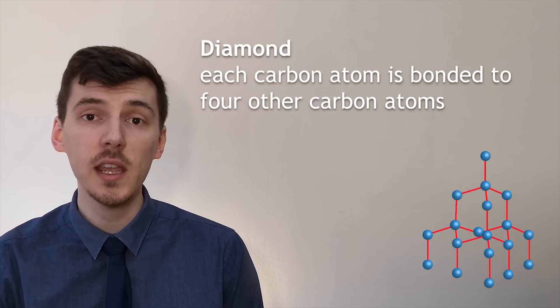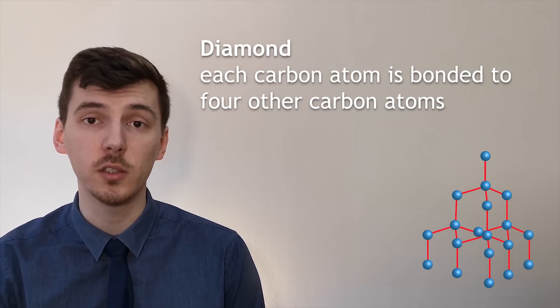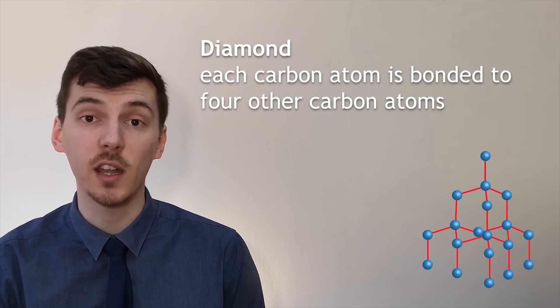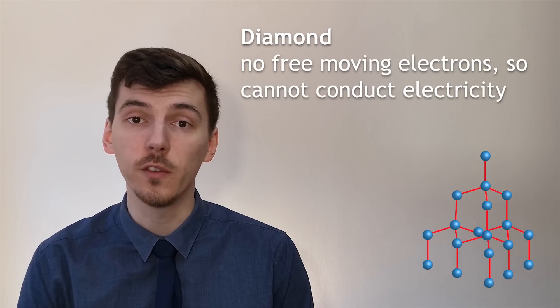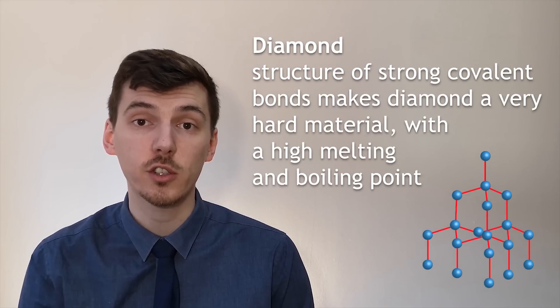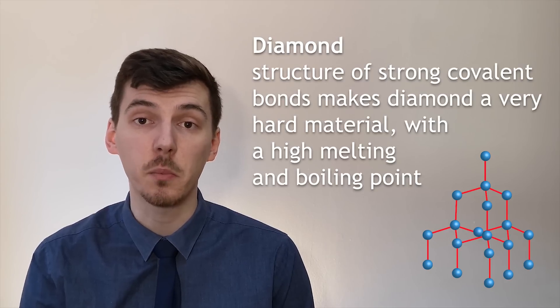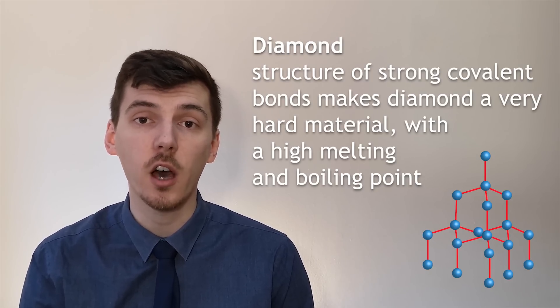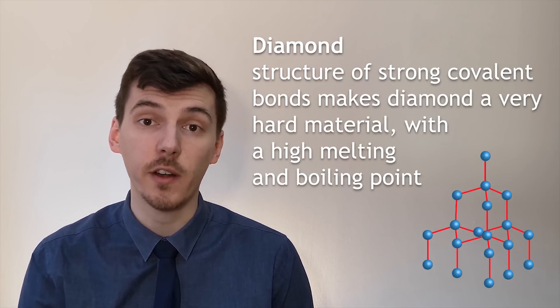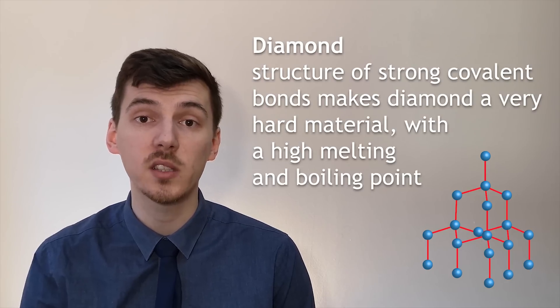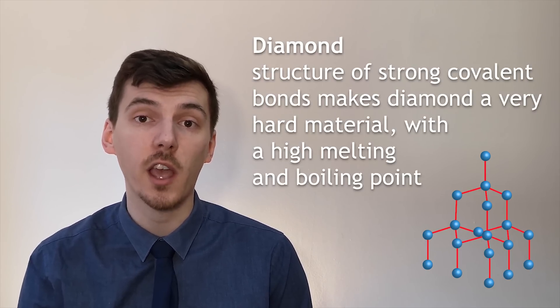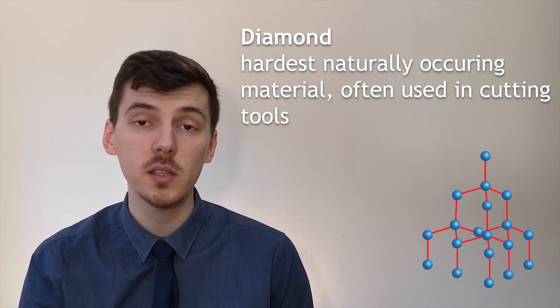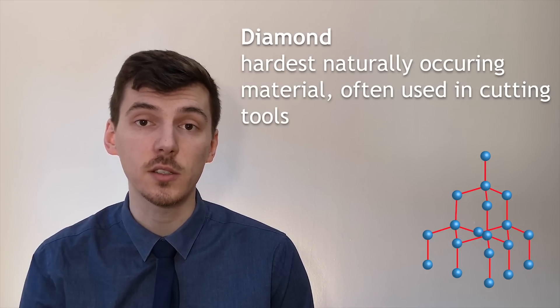In diamond, each carbon atom is covalently bonded to four other carbon atoms in a repeating lattice structure. In diamond there are no free-moving electrons. This rigid structure of carbon atoms held together by very strong covalent bonds makes diamond a very hard material. It means that it has a very high melting and boiling point because the amount of energy required to break the covalent bonds is going to be very high. Because of these properties, diamond is often used in cutting tools.